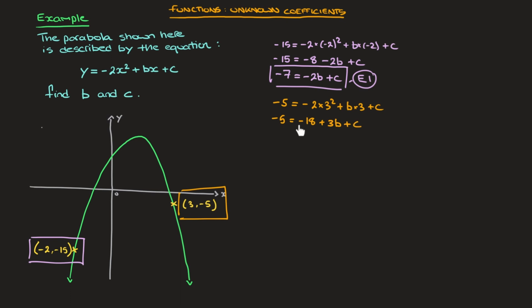Now I'll get rid of the negative 18 on the right-hand side by adding 18 to both sides of this equation. On the left-hand side we'll have negative 5 plus 18, which is 13, and on the right-hand side we'll have 3b plus c. We now have our second equation involving the two unknowns b and c. I'll call it e2, as in equation 2.